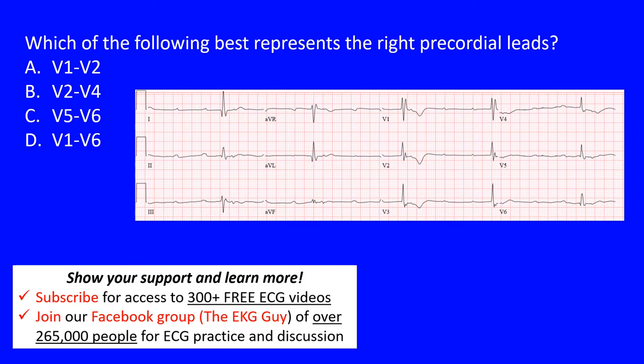Here we have a question that states: which of the following best represents the right precordial leads? Knowing the leads on the 12-lead ECG is very important. We're looking for the precordial leads — specifically the right ones.